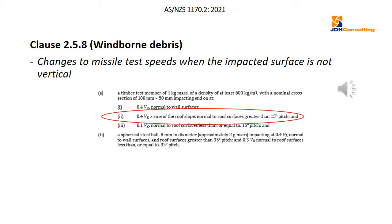Clause 2.5.8 covers impact loading from wind-borne debris. Questions were asked about what happens when you have an impact on a surface that's not either horizontal or vertical — for example, a pitched roof. We've clarified that by adding item (ii), ringed in red, which addresses what the V_R value is — the fraction of the regional wind speed used for the testing speed — depending on the actual roof slope. This is of interest mainly to people designing structures for cyclonic regions.